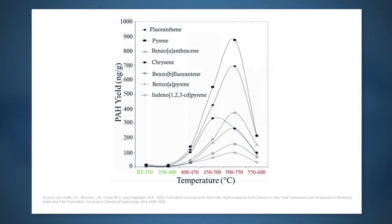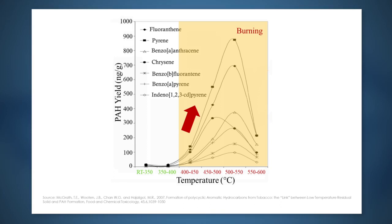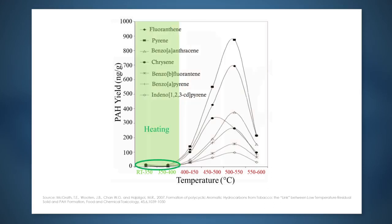So why is this important? Scientific studies have shown that as the temperature of the tobacco increases, the levels of harmful and potentially harmful constituents also increase. By eliminating combustion and reducing the temperature to which the tobacco is heated, we significantly reduce the overall levels of harmful and potentially harmful constituents. In the tobacco heating system aerosol, the levels of these harmful and potentially harmful constituents are on average reduced by 90% to 95% compared to cigarette smoke.